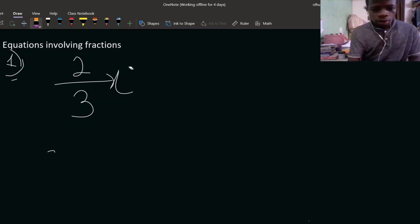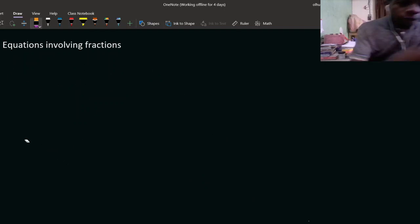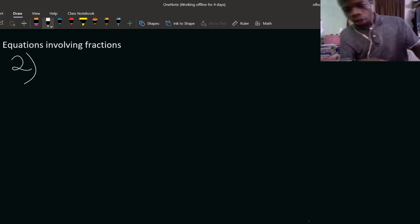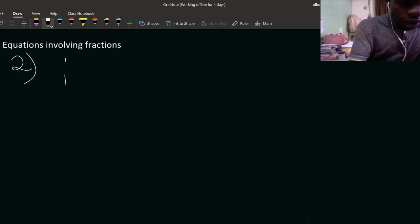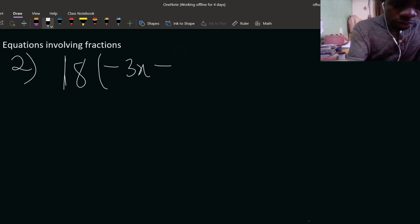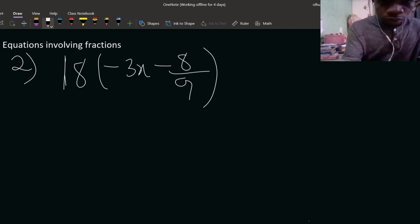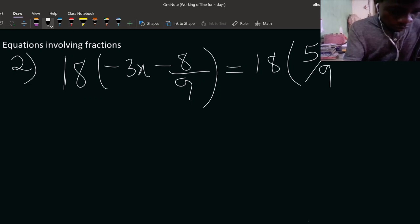Let's go to example 2. We have here this question: 18 open brackets minus 3x minus 8 upon 9 is equal to 18 open brackets 5 over 6.